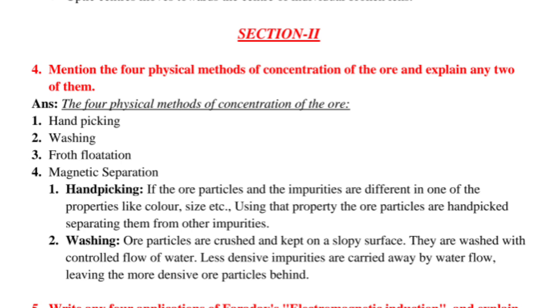Handpicking: If the ore particles and the impurities are different in one of the properties like color, size, etc., using that property the ore particles are handpicked separating them from other impurities. Washing: Ore particles are crushed and kept on a slopey surface. They are washed with control flow of water. Less dense impurities are carried away by water flow, leaving the more dense ore particles behind.